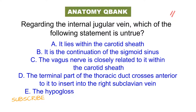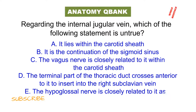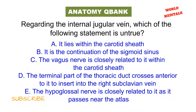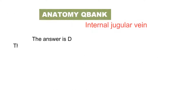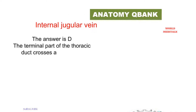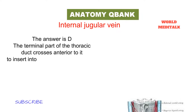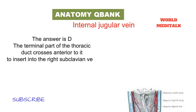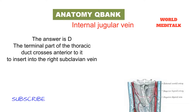The hypoglossal nerve is closely related to it as it passes near the atlas. The answer would be: the terminal part of the thoracic duct crosses anterior to it and inserts into the right subclavian vein. If we recall the anatomy of the internal jugular vein, we will see why it is the correct answer.